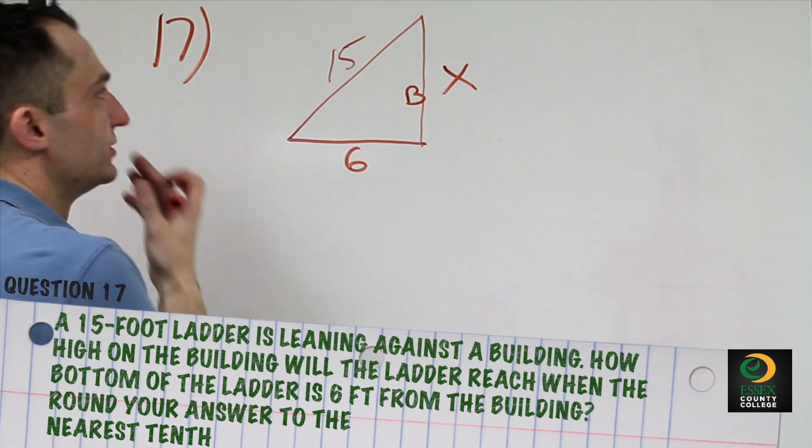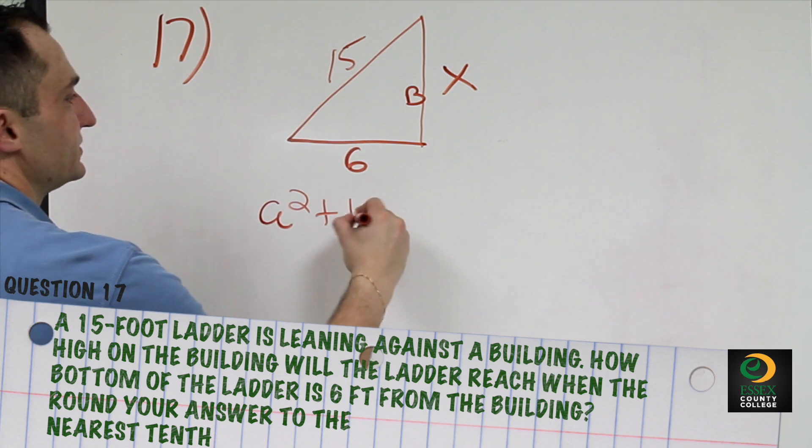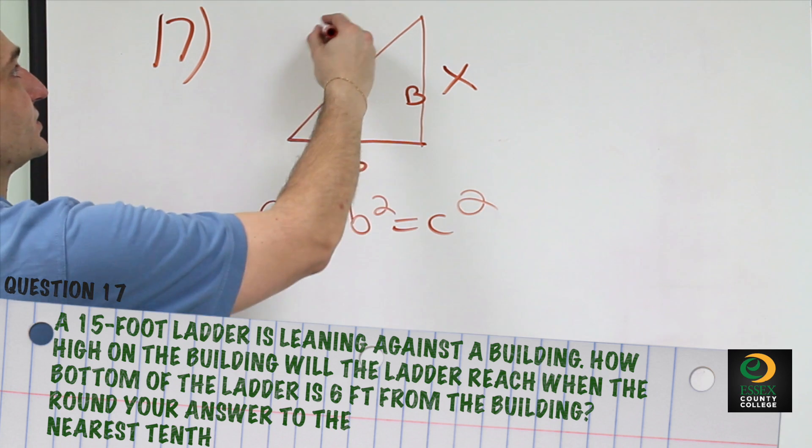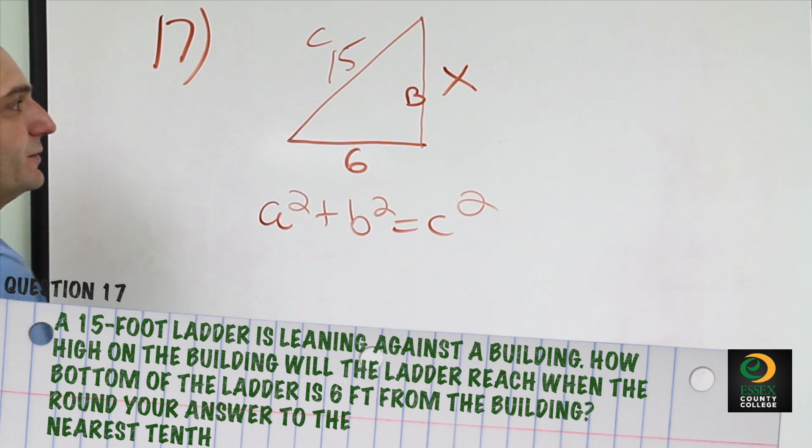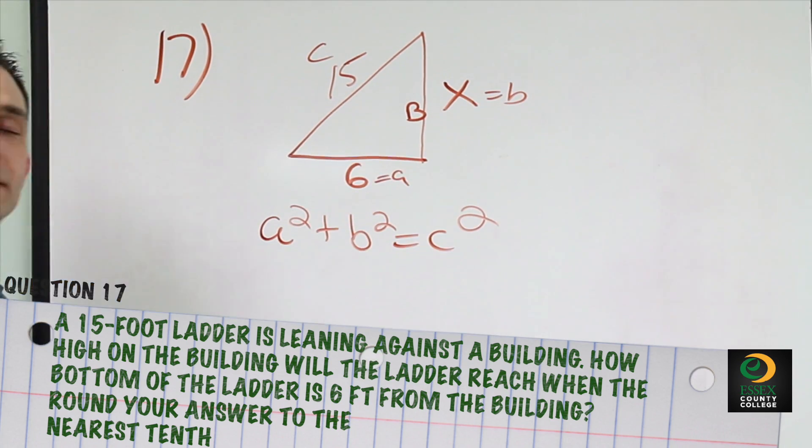So the formula to figure this out is the Pythagorean theorem which is simply a squared plus b squared equals c squared. c squared is always your longest term and then a and b are interchangeable. So 6 we'll say is a and x we'll say is b.